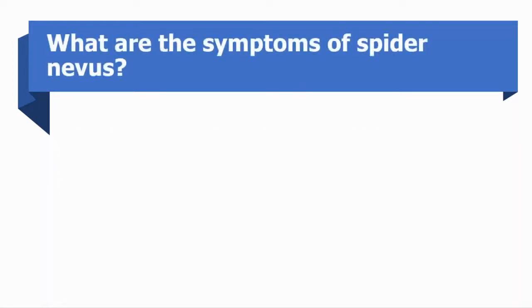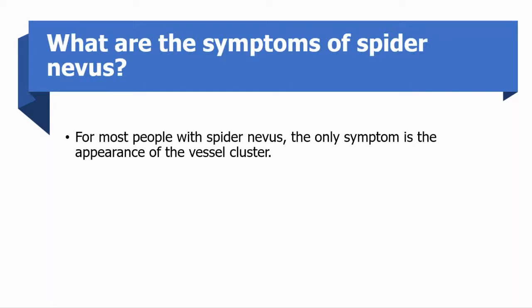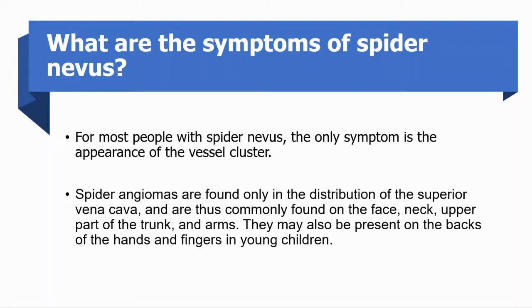What are the symptoms? For most people, the only symptom is the appearance of the vessel cluster. They are often found in the distribution of the superior vena cava and are thus commonly found on the face, neck, upper part of the trunk, and arms. They may also be present on the back of the hands and fingers in young children.